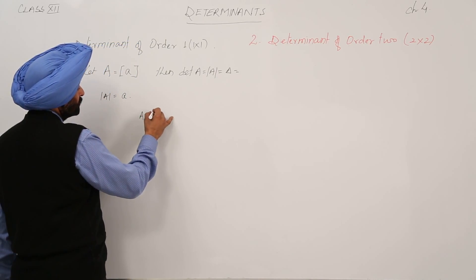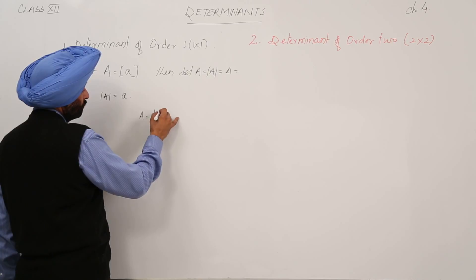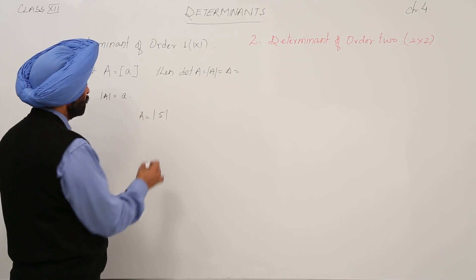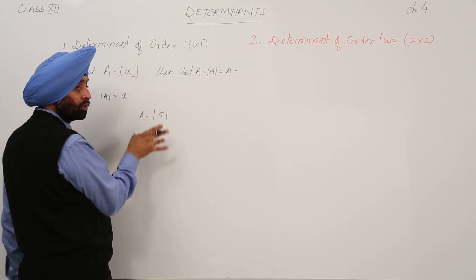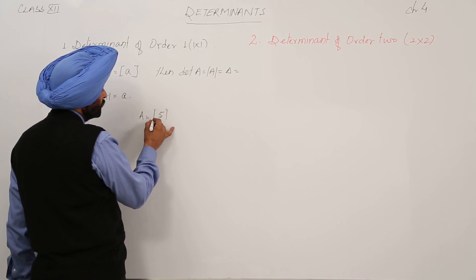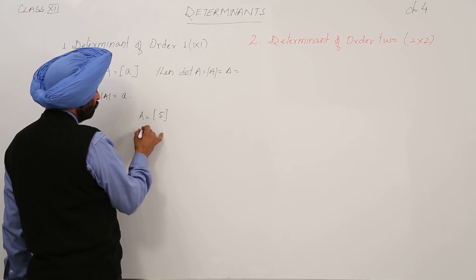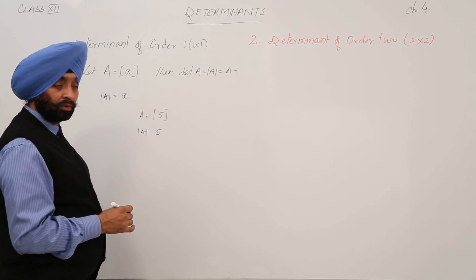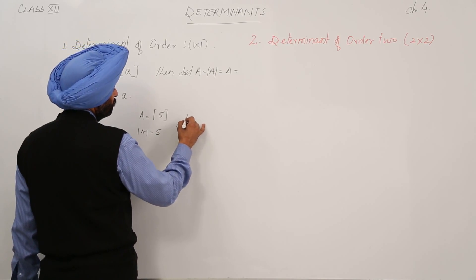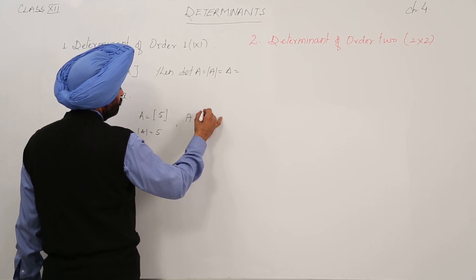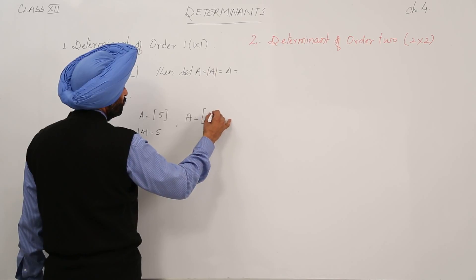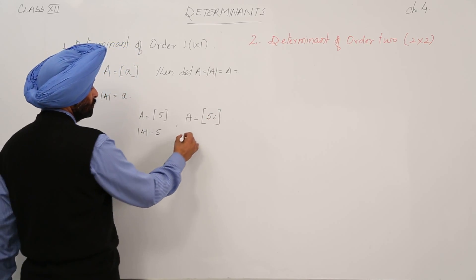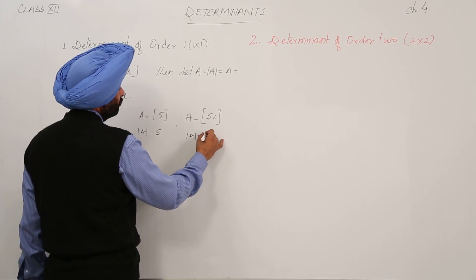Now suppose A is equal to 5. This is a matrix of order 1×1. Then determinant of A is equal to 5. If A is equal to 5i (5 iota), then determinant of A will be 5i itself.